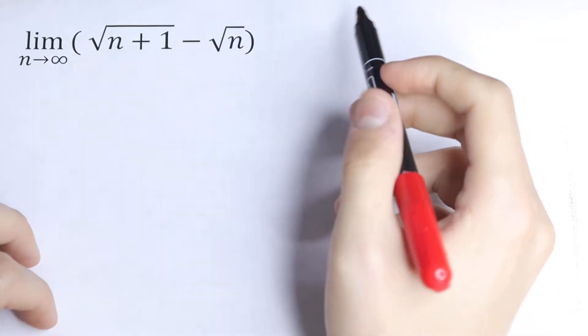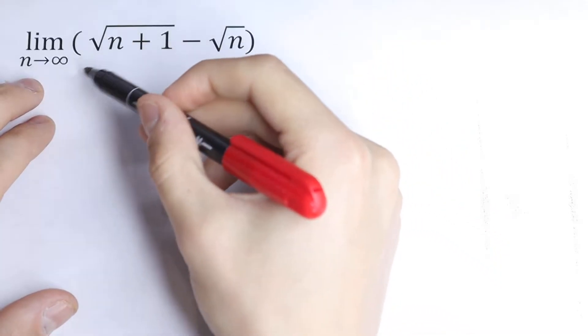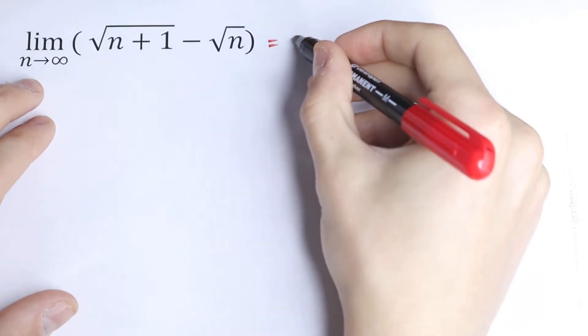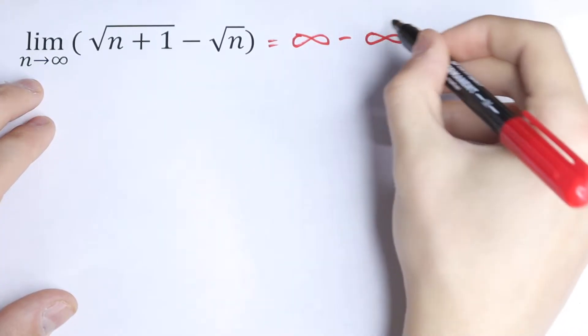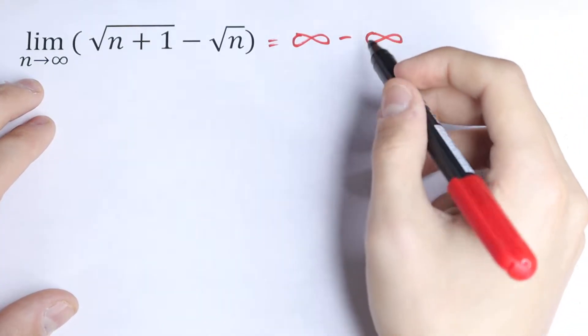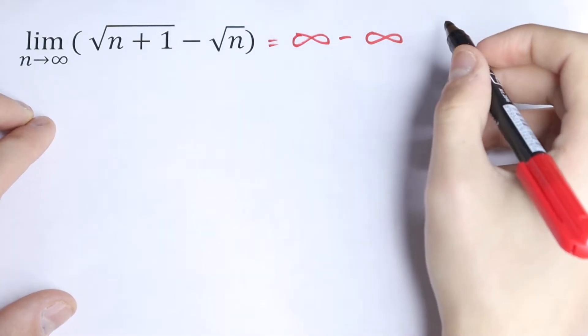How can you solve this? First of all, we can use direct substitution. So if we put infinity right here, we will have that this limit will be equal to infinity minus infinity. So we don't know what value that represents, because infinity minus infinity is undefined.